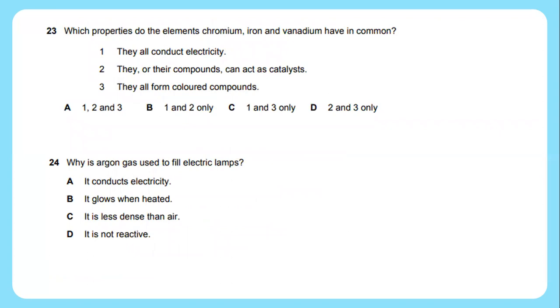Question 23: Which properties do the elements chromium, iron and vanadium have in common? We can see that they all conduct electricity, they or their compounds can act as catalysts, and they all form colored compounds. So the answer will be 1, 2 and 3.